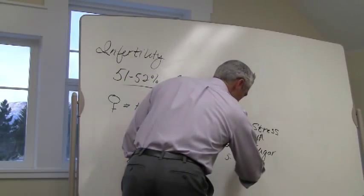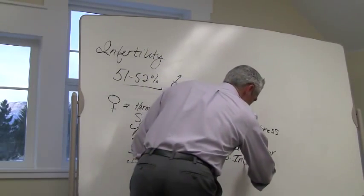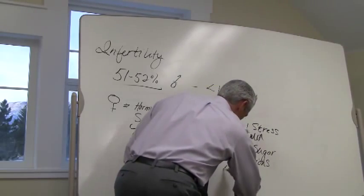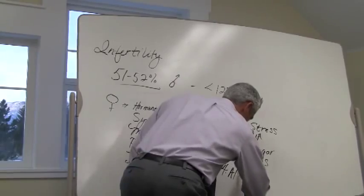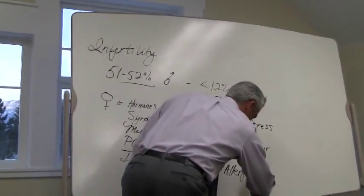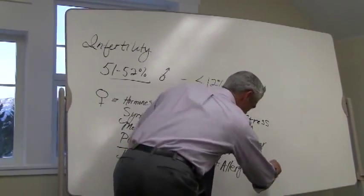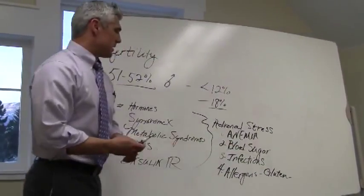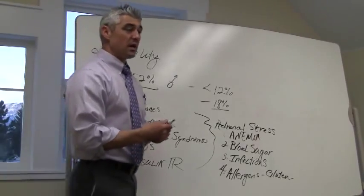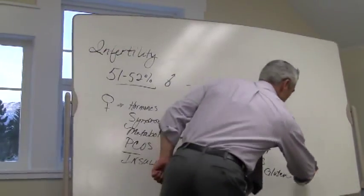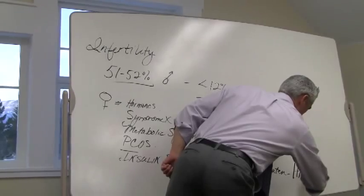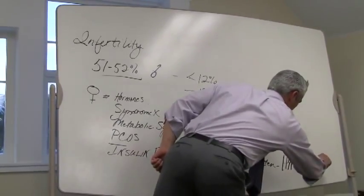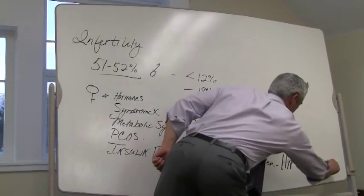The third thing that we look at as deal breakers are infections in the GI system. And then finally, allergies and primarily food allergens. And the one that we see most commonly is gluten, because of its concomitant antibody reaction that creates an autoimmune thyroid. So hypothyroidism is the other thing that we look at with infertility in the female.